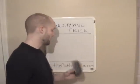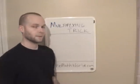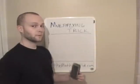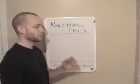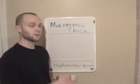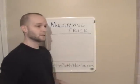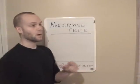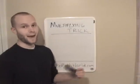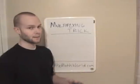Hey everyone, this is Kevin from TheMathWorld.com and today we're going to be going over a nice little multiplying trick — multiplying numbers where the tens digits are the same and the ones digits add up to 10.